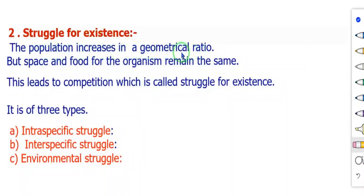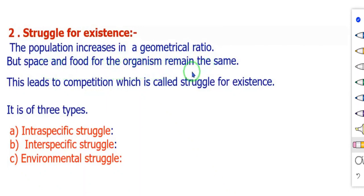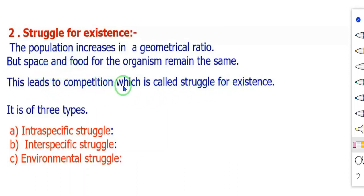The second principle is struggle for existence. The population increases in a geometrical ratio, but space and food for organisms remain the same. There is a shortage in food and shelter, and this leads to competition, which is called the struggle for existence.